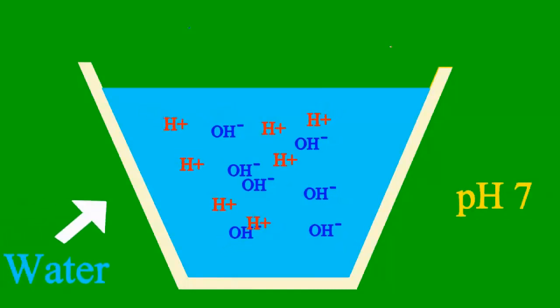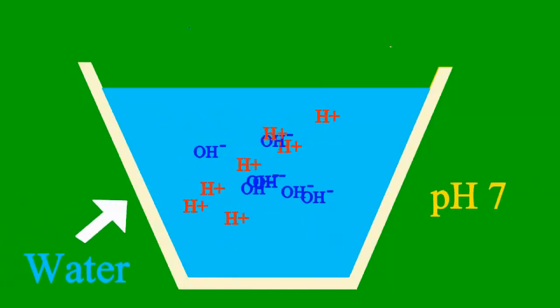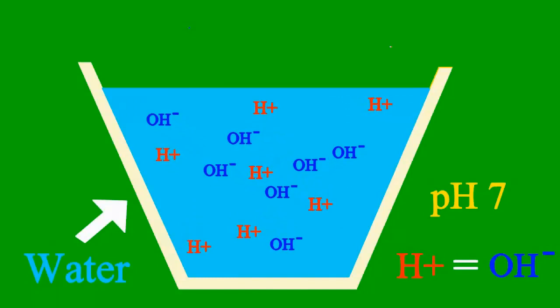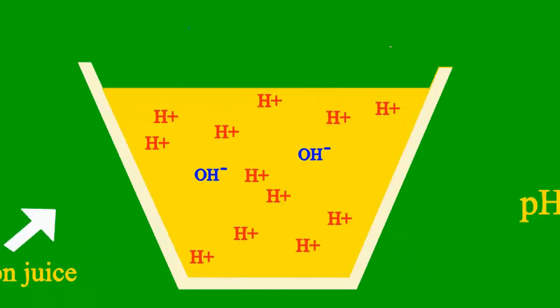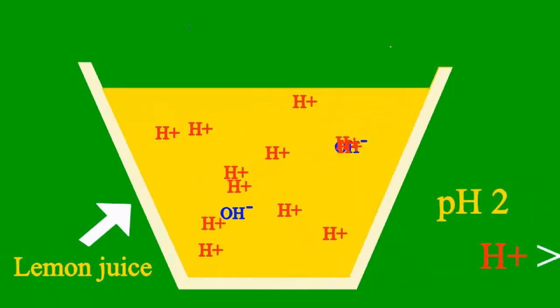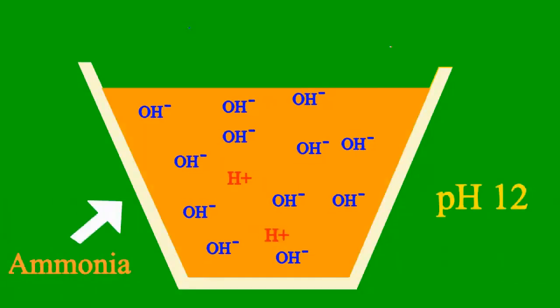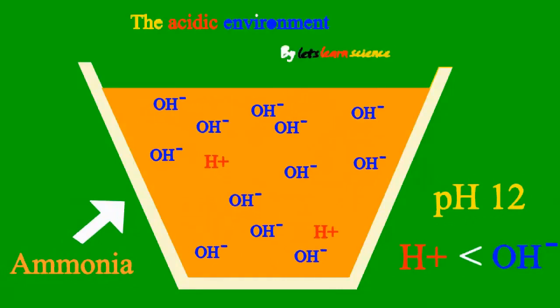When the pH is 7, it's a case where the sample is neither an acid nor a base. But less than 7, it's an acid we say; more than 7, it's a base all the way.